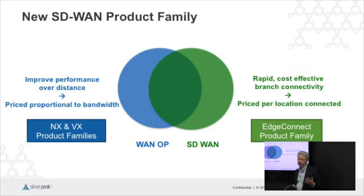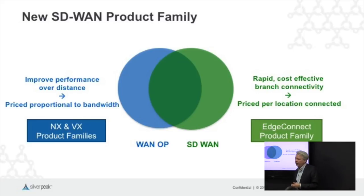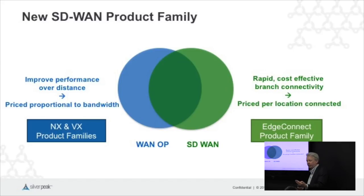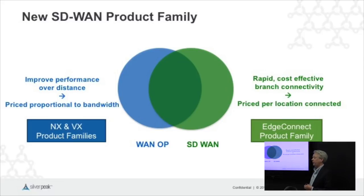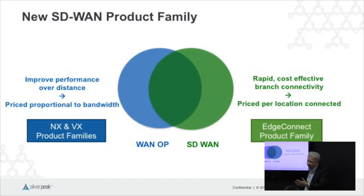In WAN optimization, because of values around performance and potentially saving bandwidth, pricing tends to be proportional to bandwidth. On the other hand, when someone is looking to connect the branch, part of the attraction is: I'm stuck with 10 megabit per second MPLS, and I'm going to add 100 megabit per second internet. They don't want to pay 10 times as much. So for SD-WAN, people are looking at pricing by site — a more flat kind of pricing.